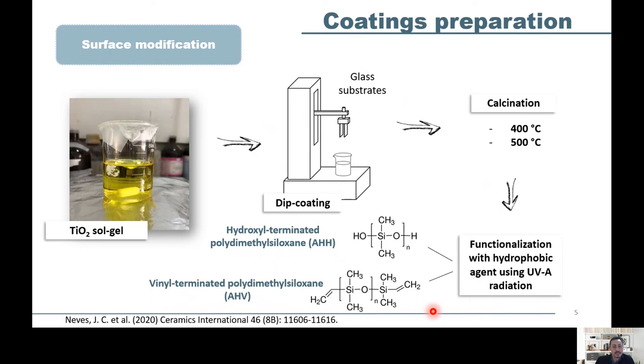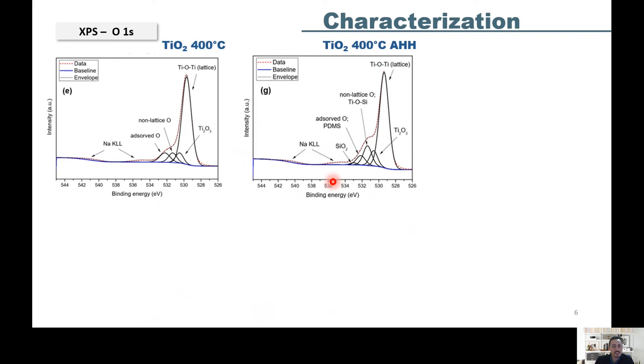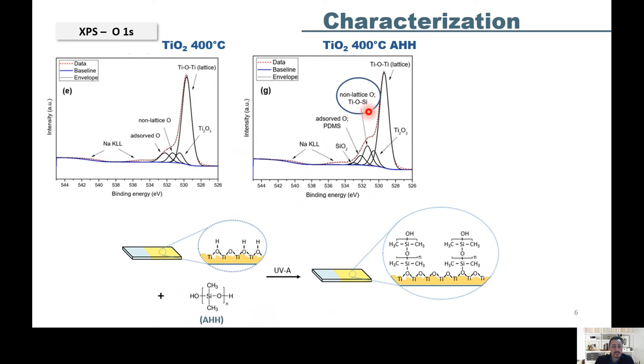The XPS technique was used to identify the chemical bonds established between titanium dioxide and hydrophobic agents. The XPS spectrum of titanium dioxide calcined at 400 degrees Celsius and modified with hydroxy agent shows the formation of titanium-oxygen-silicon bond as well as the presence of silica due to the degradation of polymer with temperature as shown here. And here we can see an image showing the mechanism.